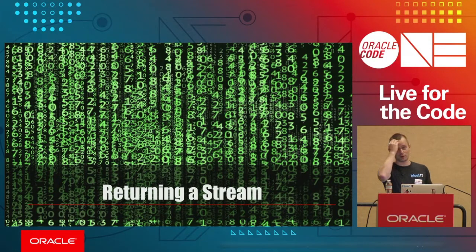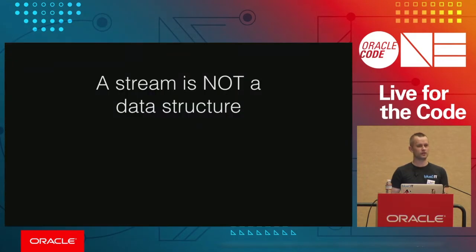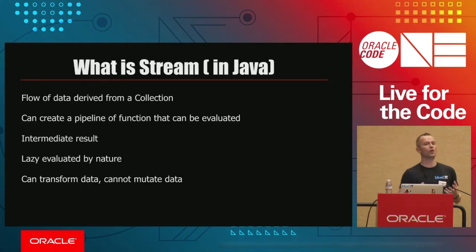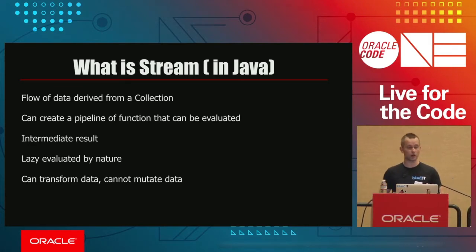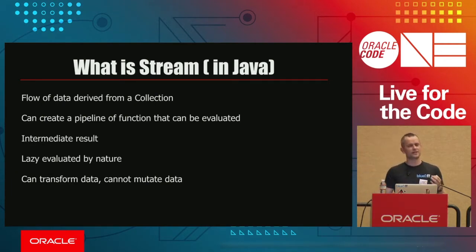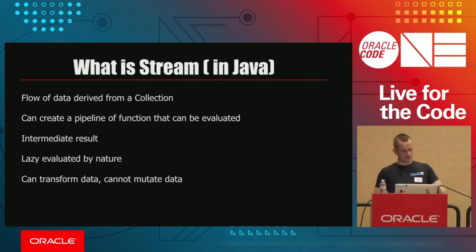The next mistake: returning a stream. And this one is debatable. What is a stream? More importantly, what is it not? A stream is not a data structure — it's so important I'll say it twice. A stream is a flow of data, most of the time derived from a collection. You can create pipelines with higher-order functions. And foremost, it's lazy evaluated and it's an intermediate result — it's your working copy, not what you hand to end customers.